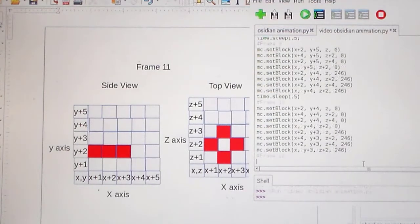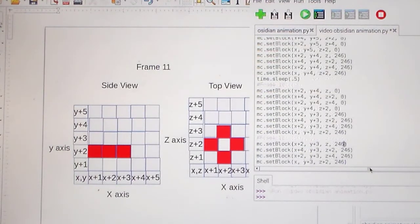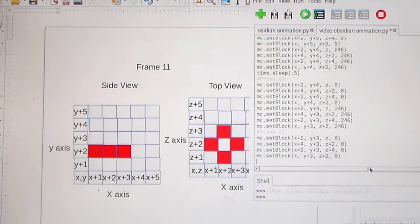So here's our frame 11. First step, take all of this previous stuff, paste it in, and now we can turn it all to zeros. Alright, and now we have to code each of these. You can see that the Y plus 2 is always going to be, or the Y value is always going to be Y plus 2.